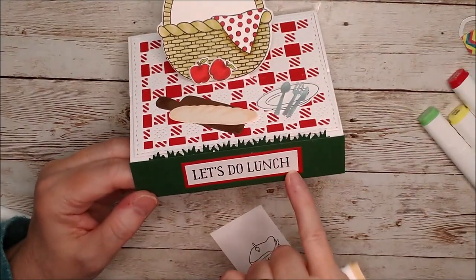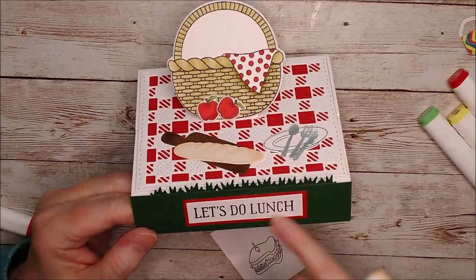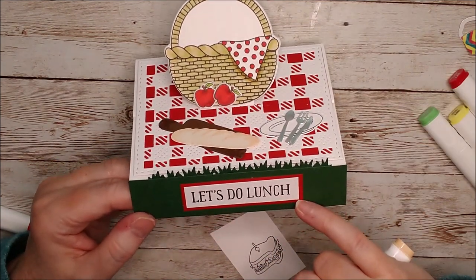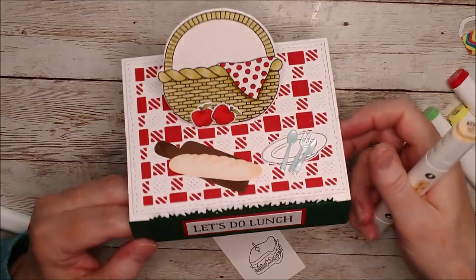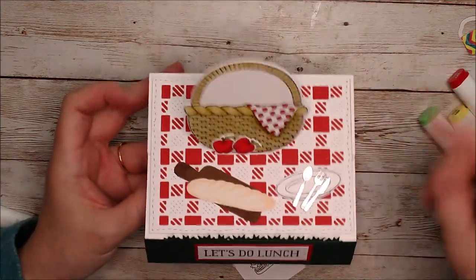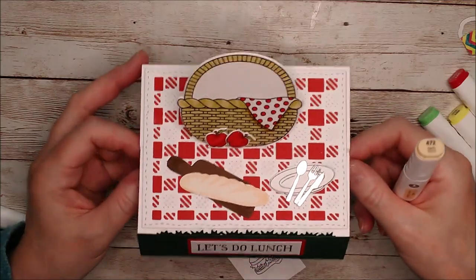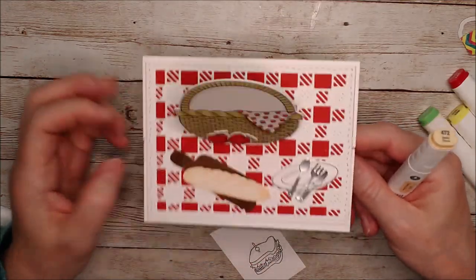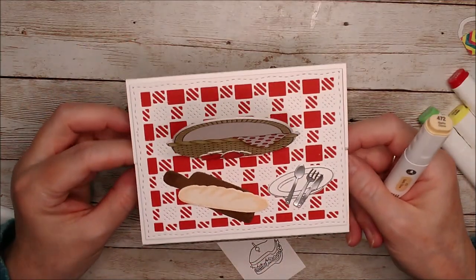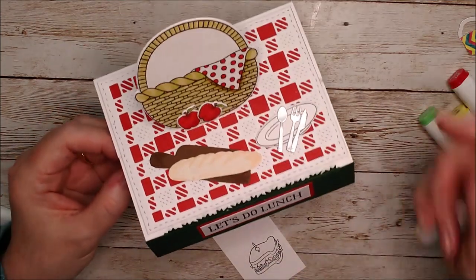So I've gone ahead and I have stamped out the let's do lunch. And I've put that on the front. I've just stamped it onto white card and backed it onto red. And I've also stamped and cut out two little apples and just put them on the front there as well. So I didn't actually want to have too much stuff on this. But then I thought let's do lunch, there really wasn't enough food.